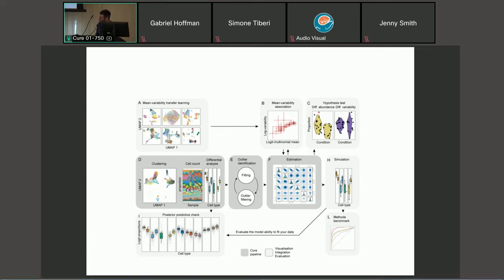We have data which includes cell type identity. We provide a layer of outlier identification and filtering with our method. Then we have our estimates. We can do quite a few things with our model. For example, we can do hypothesis testing on differential abundance, but also on differential variability.